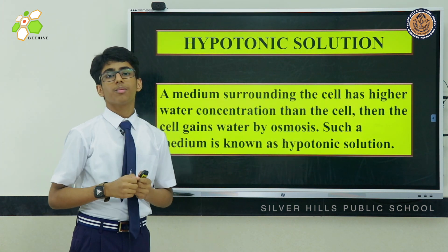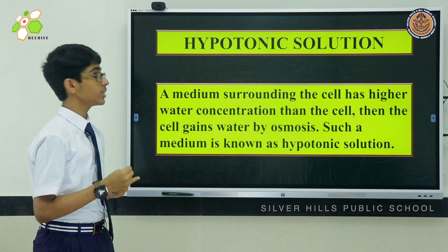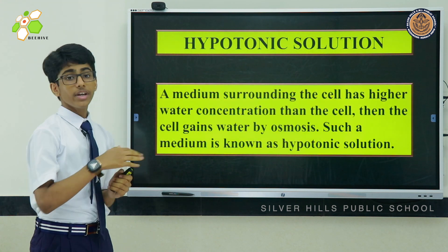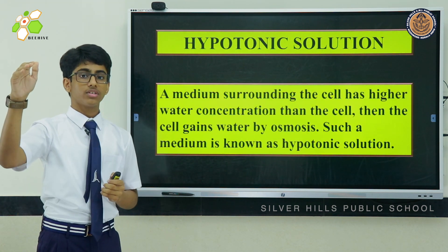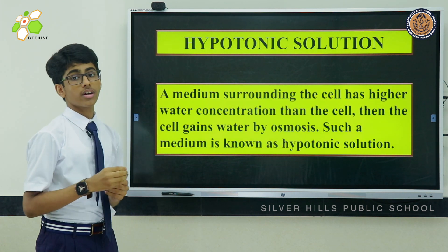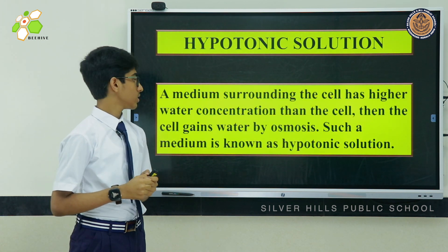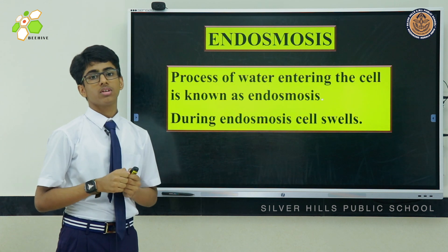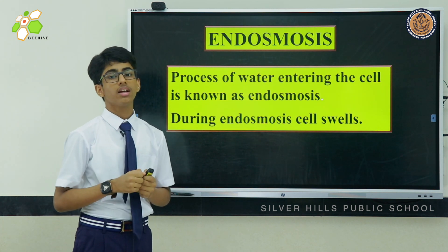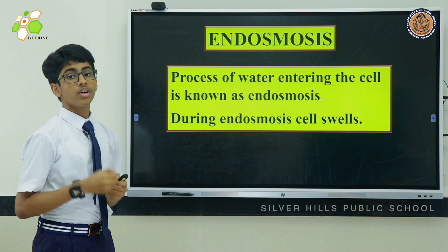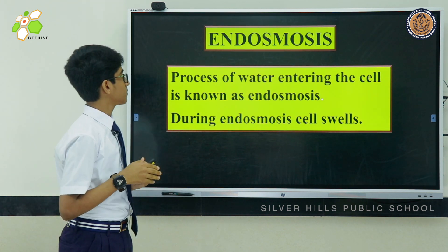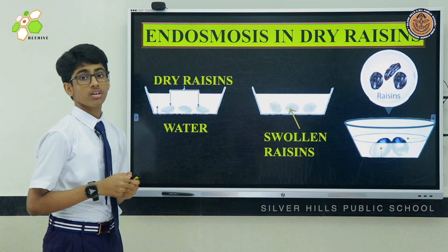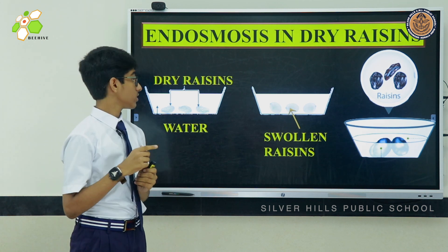There are three types of solution: hypertonic, hypotonic, and isotonic. In a hypotonic solution, the medium surrounding the cell has higher water concentration than the cell, so the cell gains water by osmosis. The process of water entering into the cell is known as endosmosis; during endosmosis, the cell swells. We can see this in the picture of dry raisins soaked in water — after some time they increase in size.